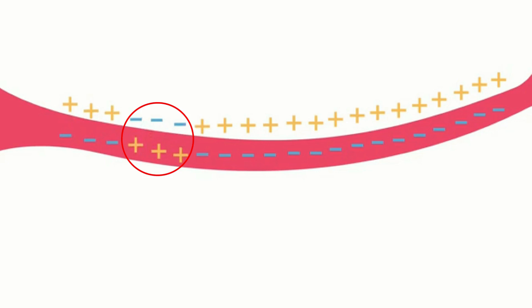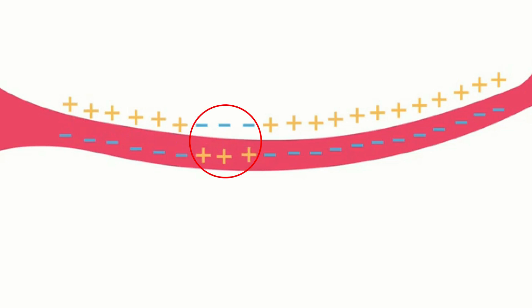This momentary charge difference stimulates the adjacent parts, and a similar change occurs there too. As a result of stimulation, the outer surface of the plasma membrane becomes negatively charged and the inner surface becomes positively charged. As this process proceeds, the impulse gets transmitted as an electrical charge.